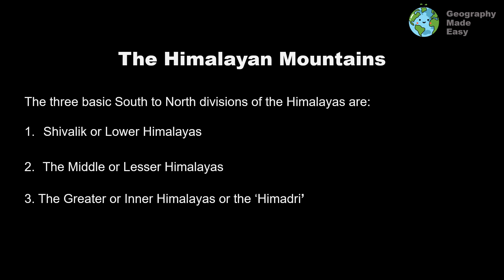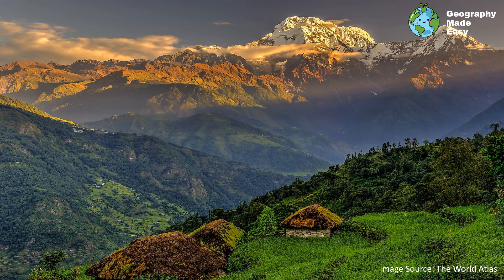Now we will deal with each unit separately, starting with the Himalayan mountains. If we look at the South to North division of the Himalayas, they can be divided into three divisions. The lowest division is called the Shivalik or Lower Himalayas. Beyond the Shivaliks lies the Middle or Lesser Himalayas, which have greater height. And finally, you have the Greater or Inner Himalayas, also known as the Himadri range.